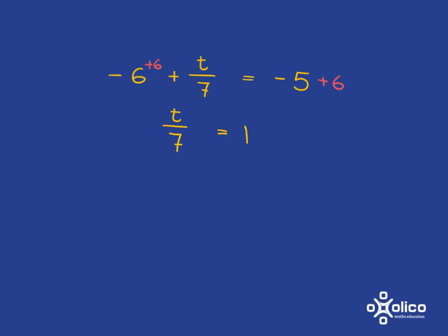Now, we're still aiming to get t on its own, and so what we need to do here, because we were dividing by 7, we need to do the inverse, multiplied by 7, and we will get that t is equal to 7.